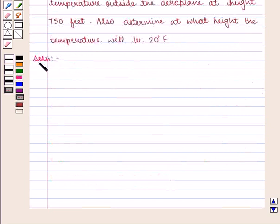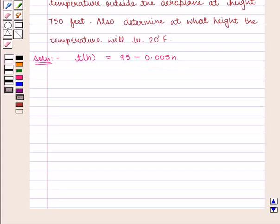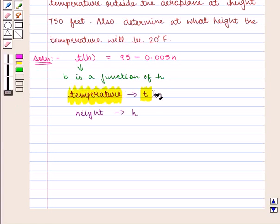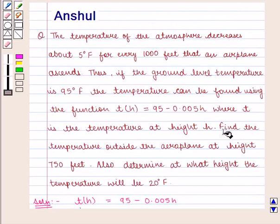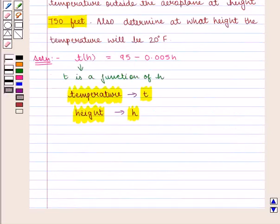Now let us start with the solution. In this question we are given a linear function T of H equal to 95 minus 0.005H, where T is a function of H showing the relationship between the temperature T outside the aeroplane and the height H of the aeroplane. We have to find the temperature outside the aeroplane at the height of 750 feet, that is when H is equal to 750 feet we have to find T.